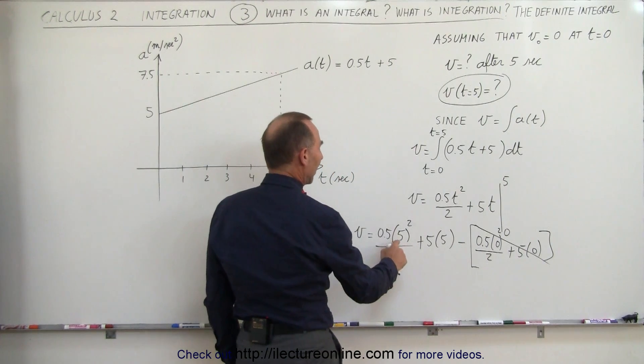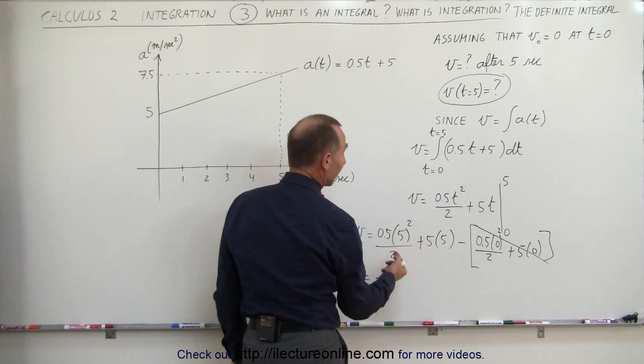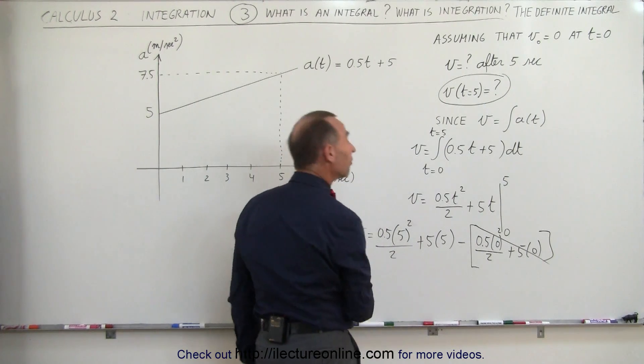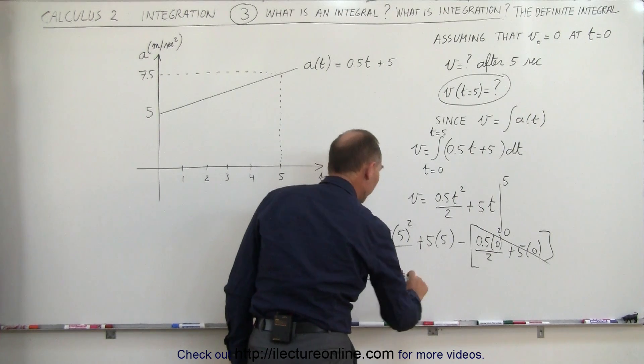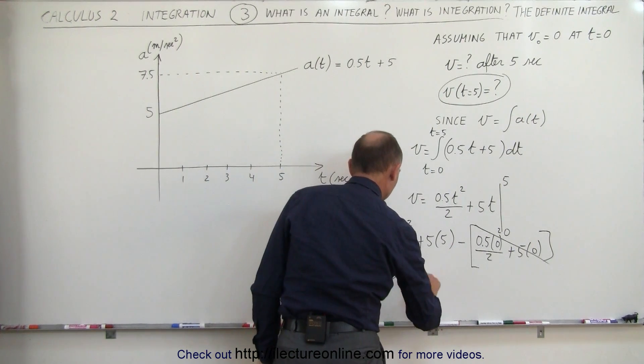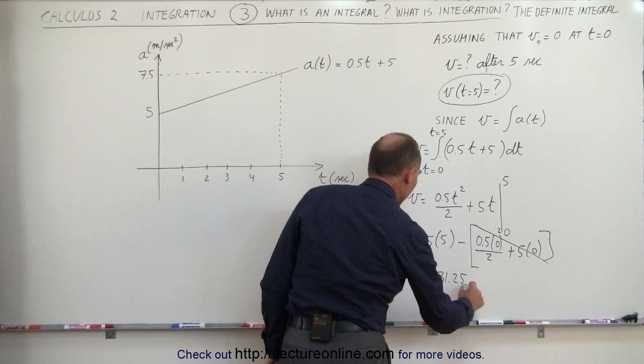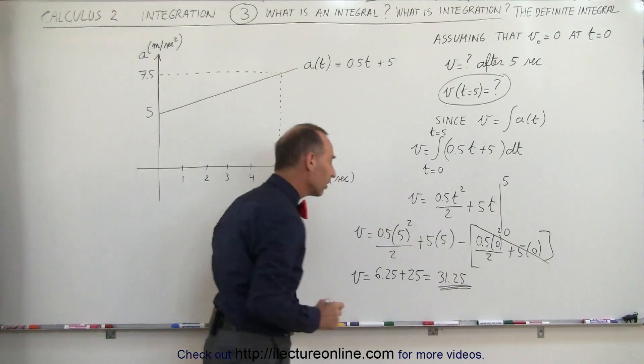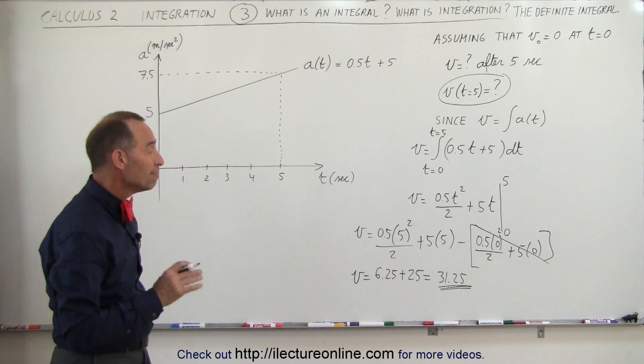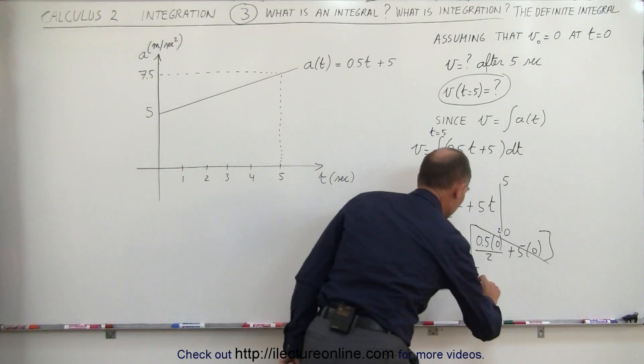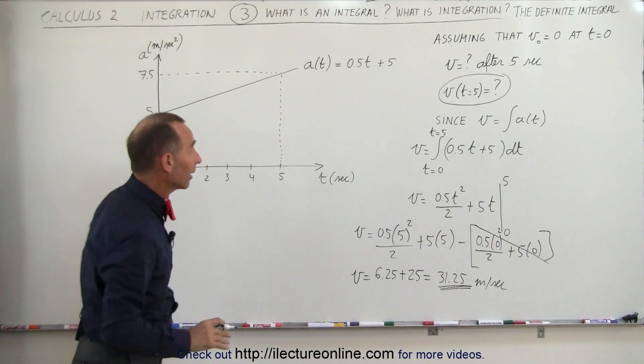v is equal to 5 squared is 25, divided by 2, divided by 2, that's divided by 4, 25 divided by 4 would be 6.25, plus 5 times 5 is 25, so that's for a total of 31.25. After 5 seconds, the car should be moving at 31.25 meters per second, so the units would be meters per second for velocity. All right, let's see if we got that correct.